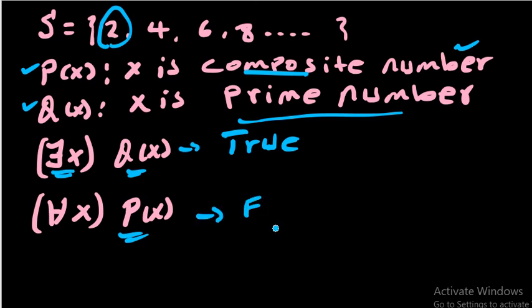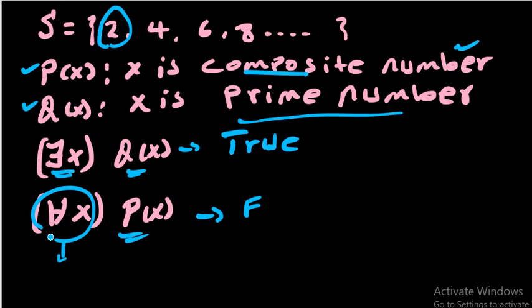If you can find one number from the universe which cannot satisfy the condition of the given proposition, the universal statement is going to be false. Therefore, the universal quantifier is sensitive to being false, and the existential quantifier is sensitive to being true. Let us try to see some other examples.